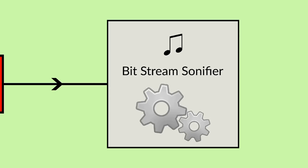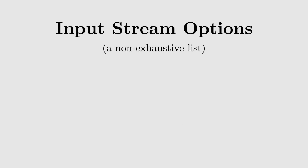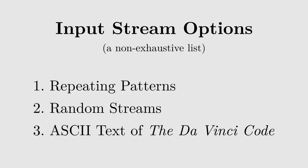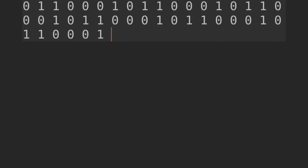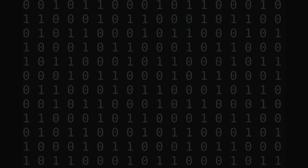Of course, the music that results from all of this depends not only on the mapping, but also on the streams of ones and zeros themselves. Obviously, there are an infinite number of possible bit streams, but let's explore three of the most obvious possibilities: repeating patterns, random values, and the ASCII text of the Da Vinci Code. A repeating pattern might be something like a zero, followed by two ones, followed by three zeros, followed by another one, over and over. Using a simple percussion sonifier, you get a loop like this.